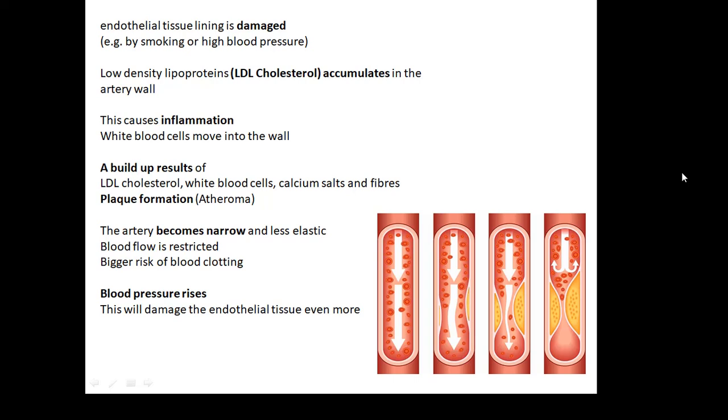What happens is that a type of cholesterol called LDL cholesterol accumulates in the wall. And this causes the wall to become inflamed, it causes inflammation. So white blood cells move in to try and fix the problem. Then you get a build-up of all kinds of stuff: the LDL cholesterol, the white blood cells, and calcium salts and fibres. And it forms plaque.